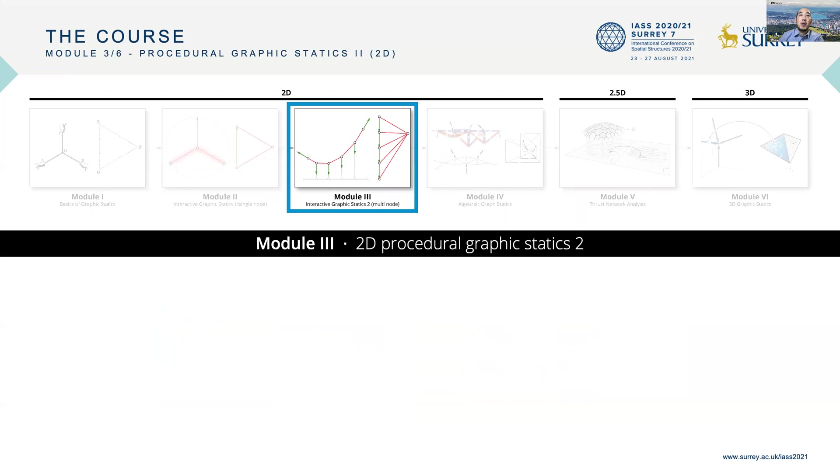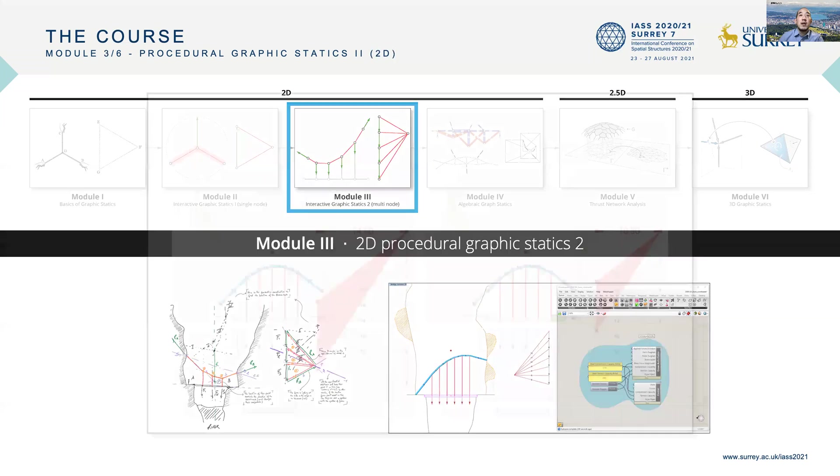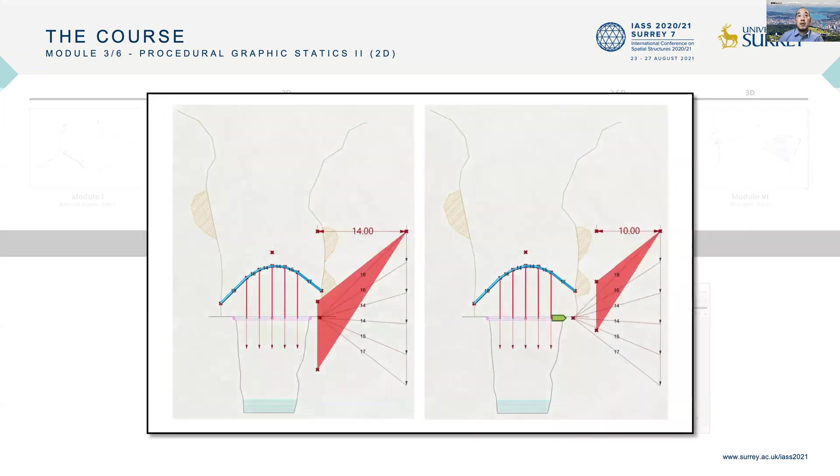Gradually building up in complexity, in Module 3, students used Grasshopper to construct form and force diagrams for multi-node structures, such as arch structures with multiple hangers. Students can build and explore more complex drawings for force-driven design explorations. In this particular case, by setting force constraints in the force diagram to explore constrained form explorations.